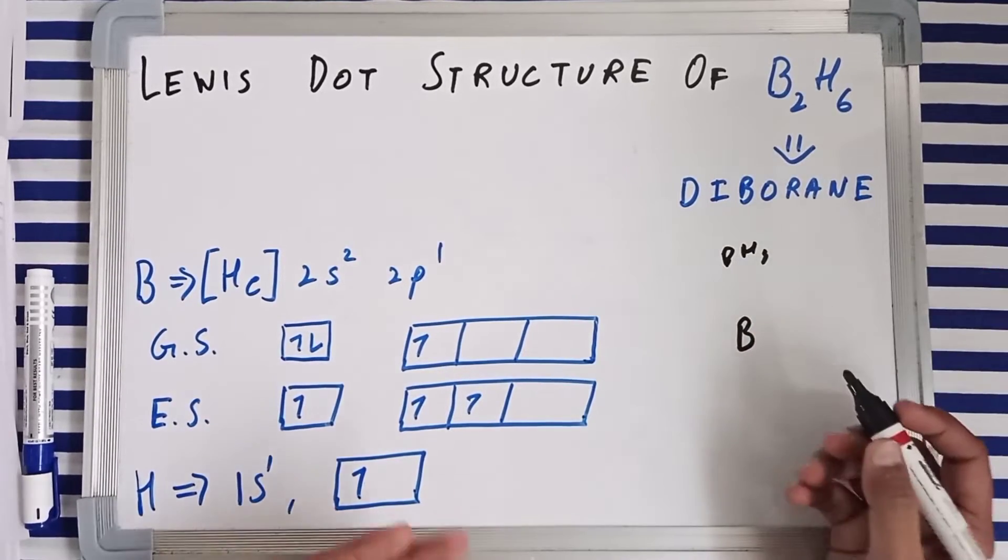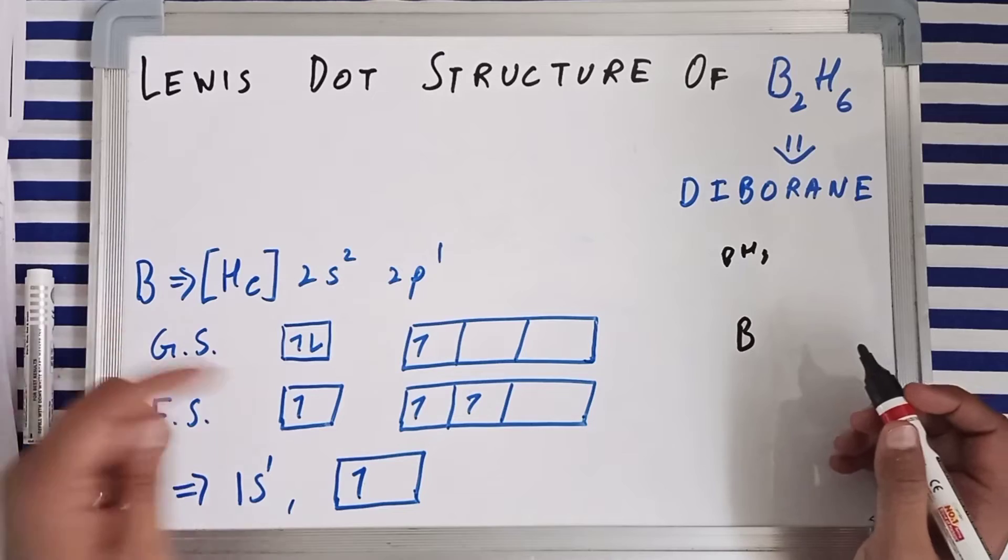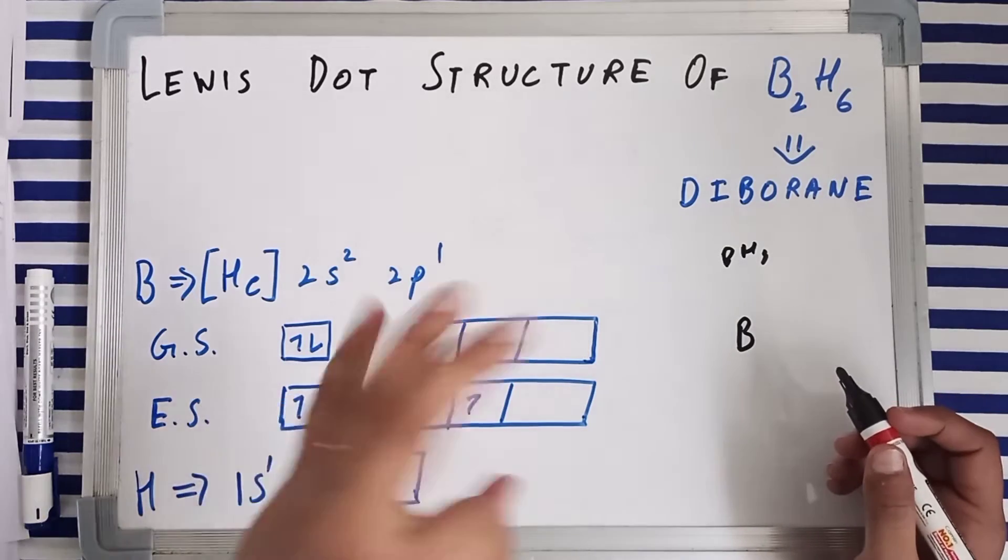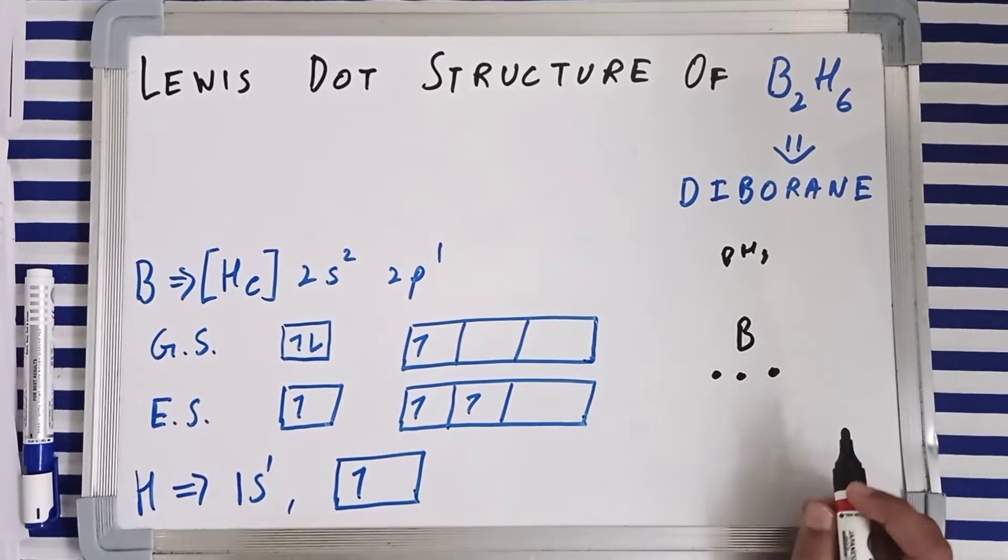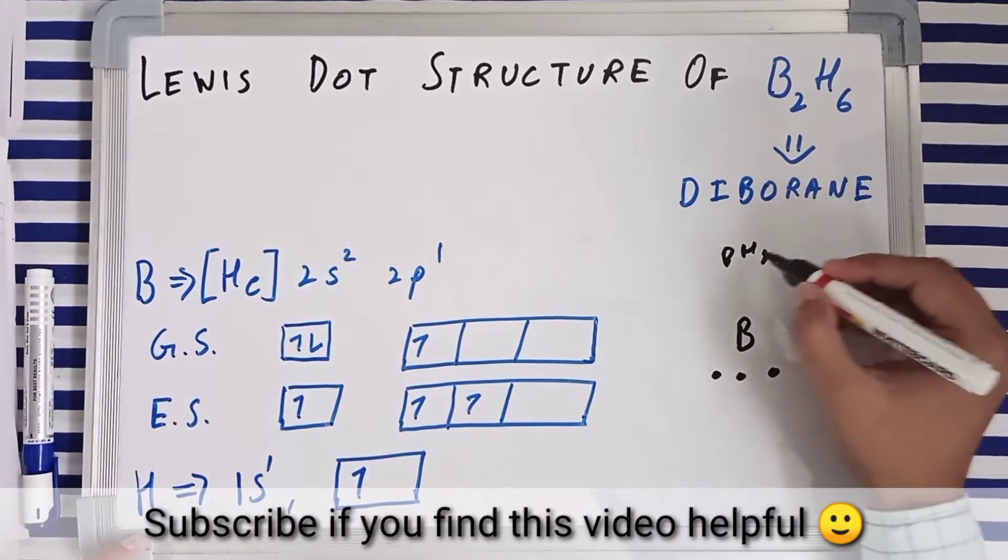So you have got boron, in BH3, you have got boron as your central atom. And it has one, two, three valence electrons. So one, two, three, and you have got in BH3 three hydrogen atoms.